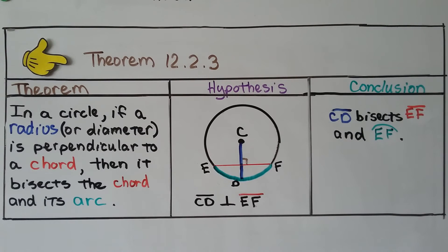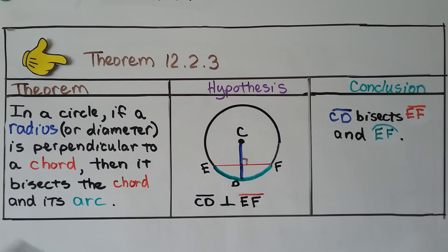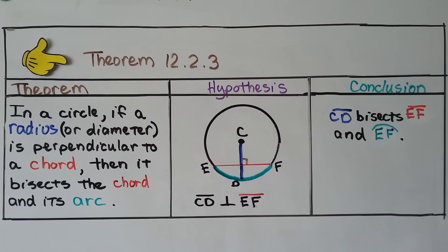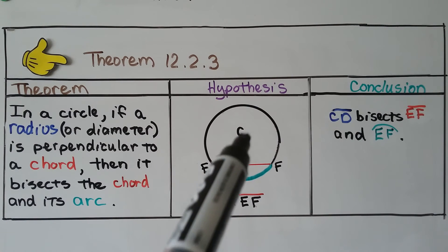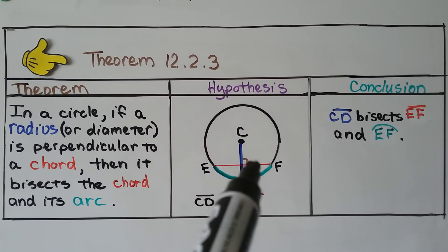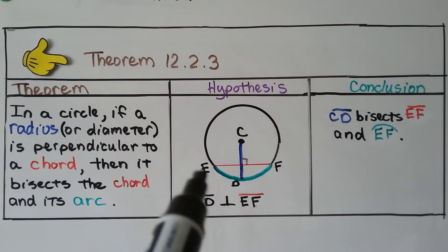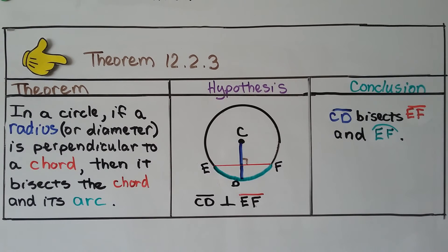So for your notes, here's theorem 12.2.3. We have a theorem, a hypothesis, and a conclusion, and the theorem says in a circle, if a radius or a diameter is perpendicular to a chord, then it bisects the chord and its arc. So if it's perpendicular to this chord, it's bisecting it. It's splitting it in half, isn't it? And the arc also. So we've got CD, this radius, is perpendicular to EF, this chord. Our conclusion is that this segment CD, this radius, bisects segment EF, this chord, and arc EF.